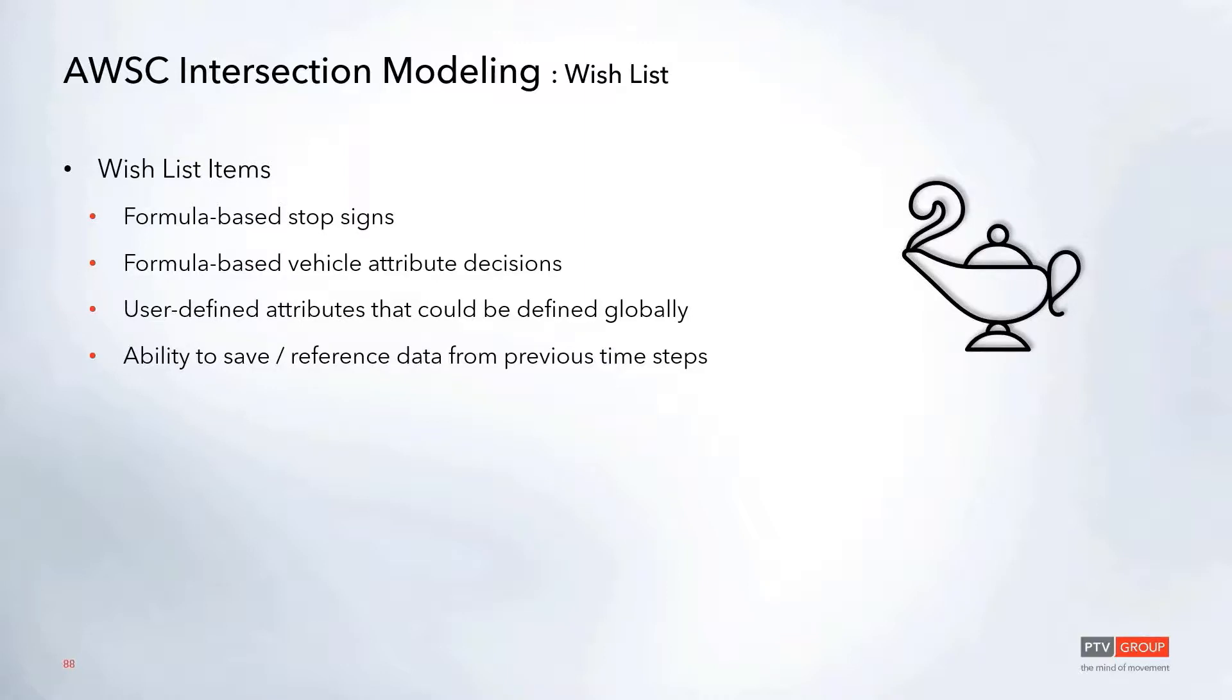Some of these items include things like formula-based stop signs and vehicle attribute decisions. So similar to the way that routing decisions have the option to have a formula defined internally, having these conditional-based stop signs and attribute decisions would help simplify some of the coding required on the COM side. And then also having an attribute that's maybe not tied to a specific object, but rather defined globally so that we could save data for specific time steps and then reference that at a later time.